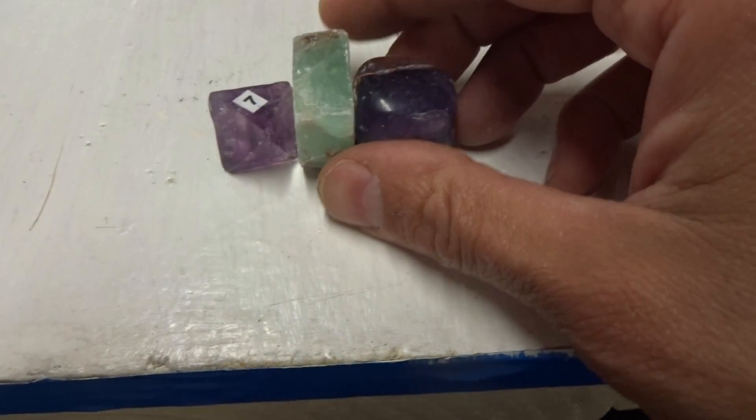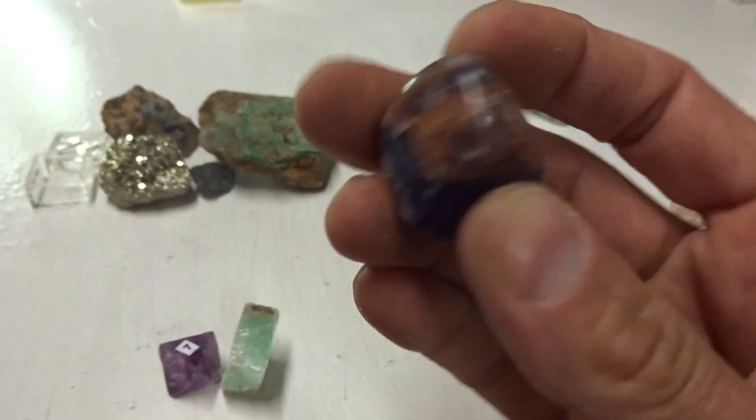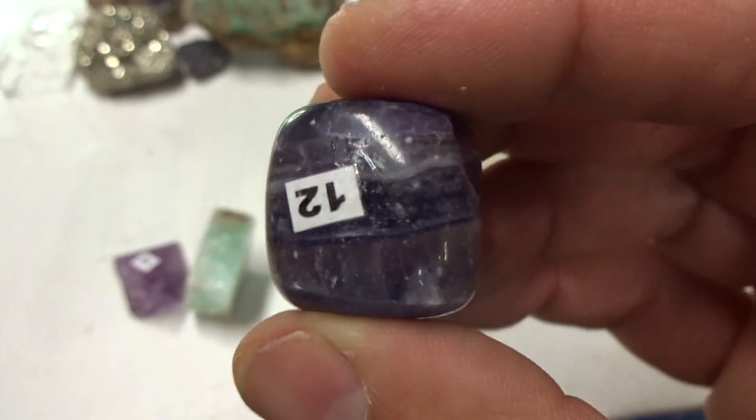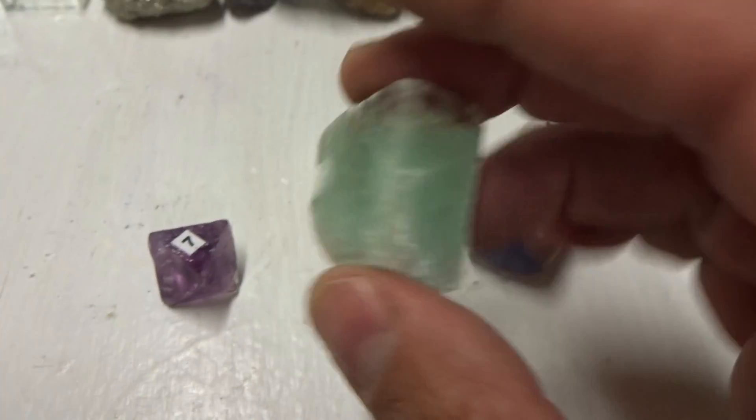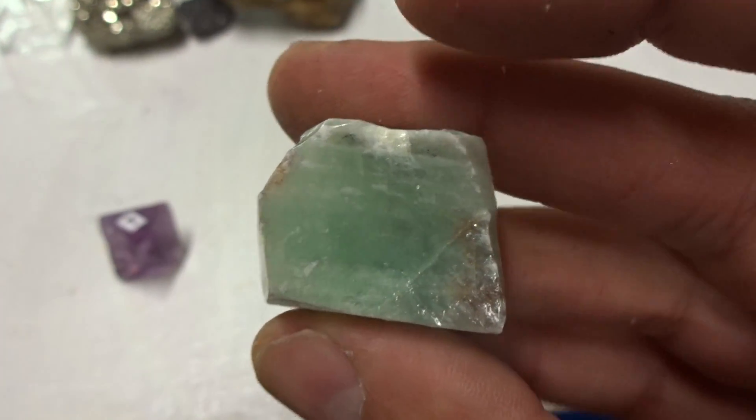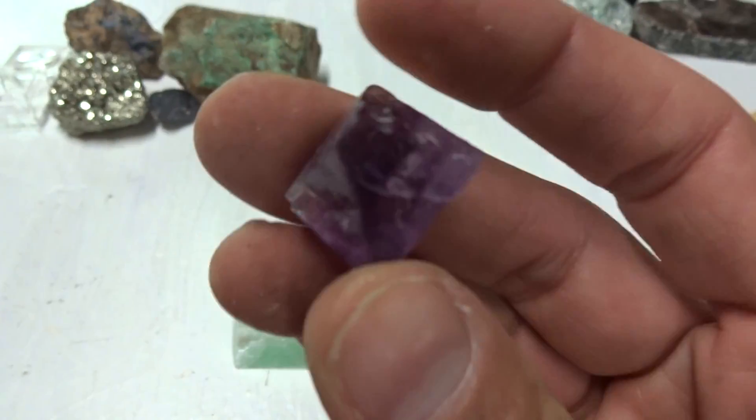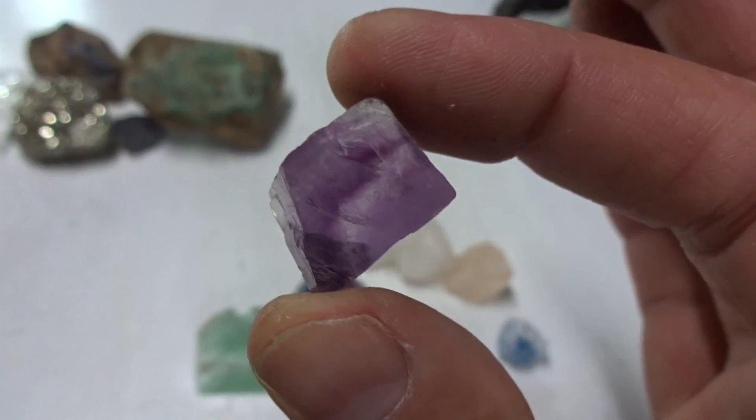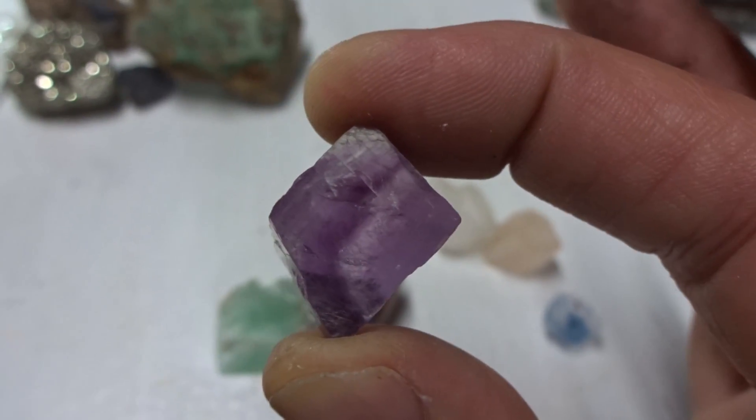Also in the halide family are the fluorides. This is blue fluoride. This is green fluoride. And this is octahedral purple fluoride. Where does the purple come from? Iron.